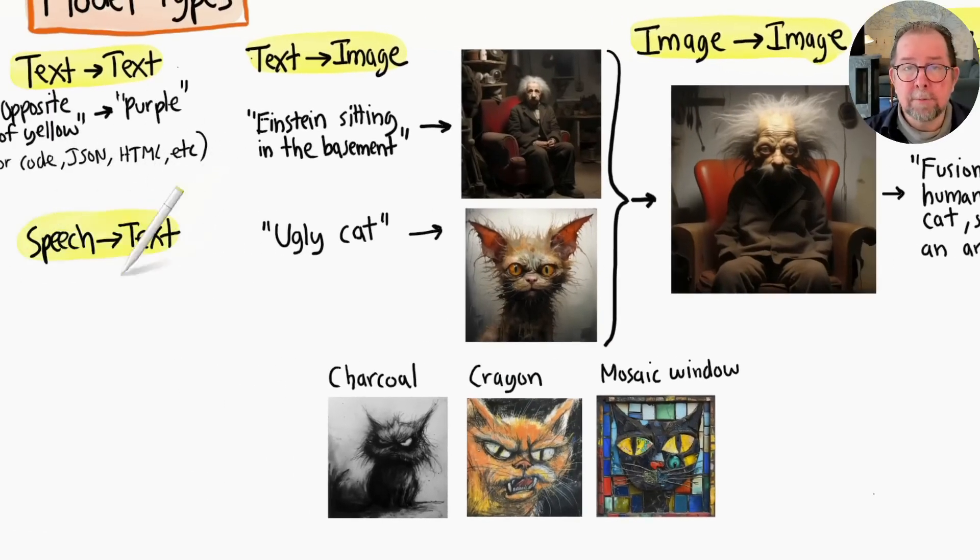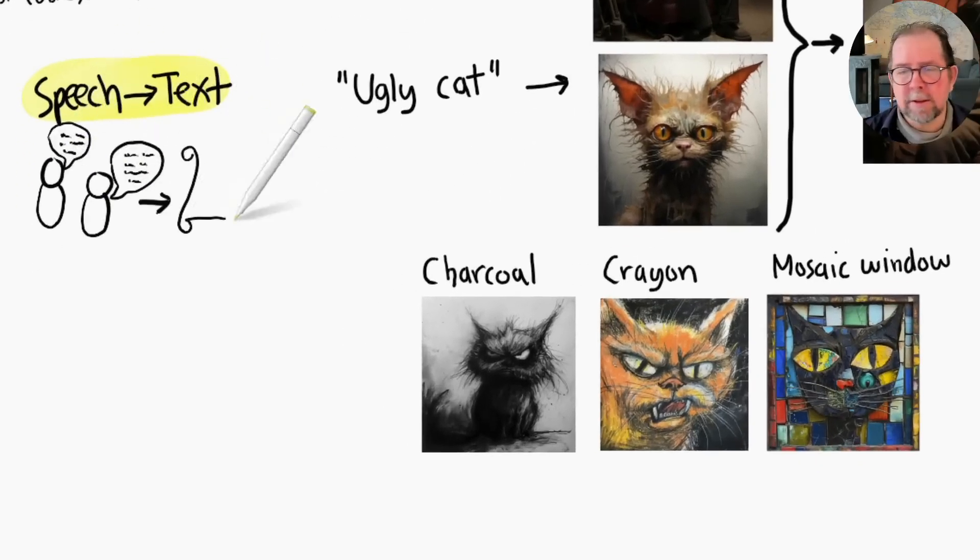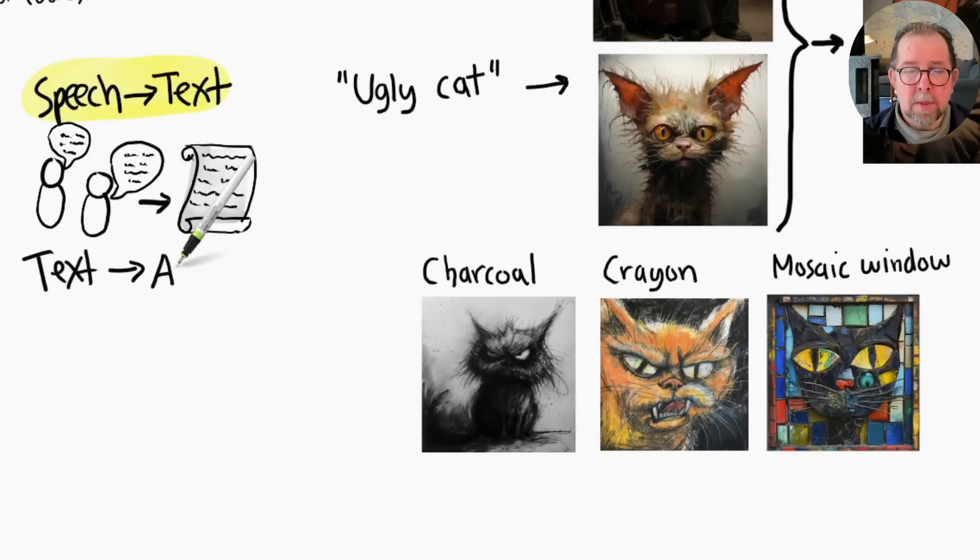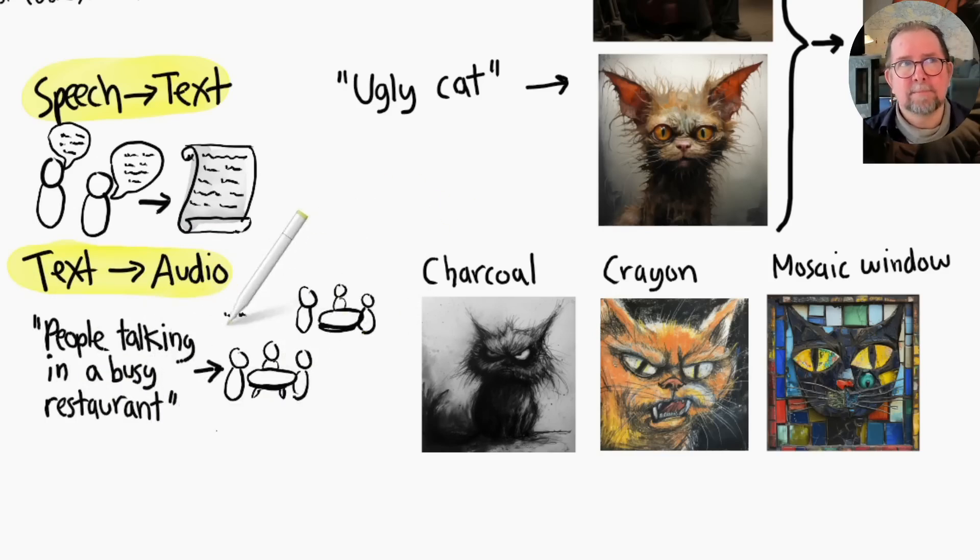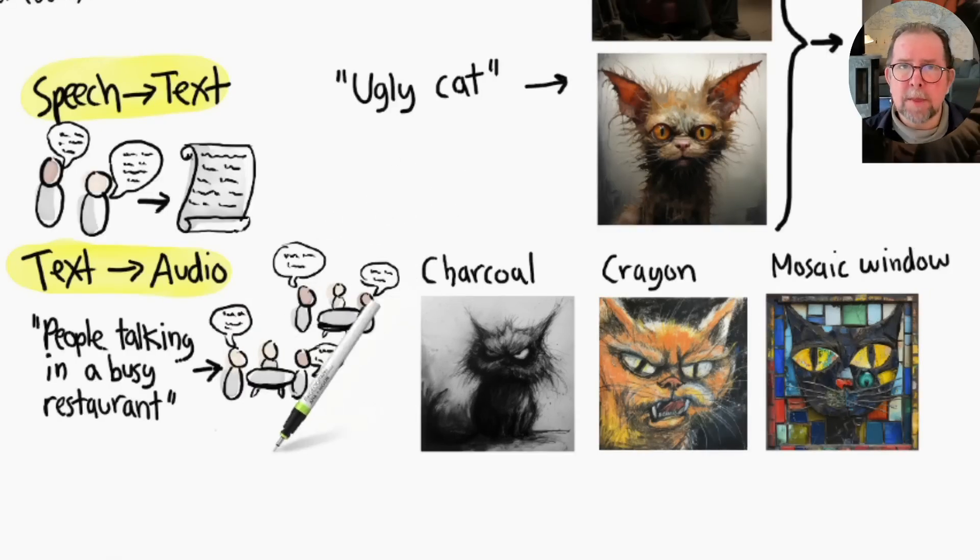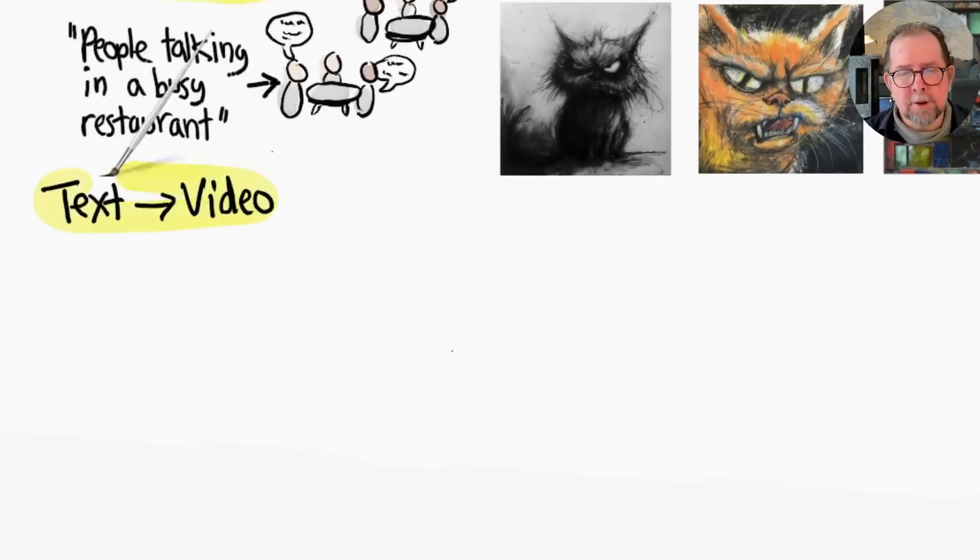And speech-to-text models create voice transcriptions, which is useful for things like meeting notes. Text-to-audio models generate music or sounds from a prompt. For example, here is some sound generated from the prompt "people talking in a busy restaurant." Okay guys, enough to stop now, thank you.